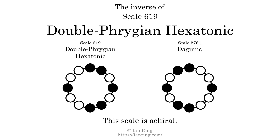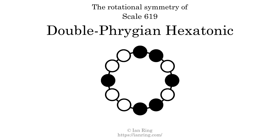The inverse of a scale is a mirror image — it is what you get when the sequence of intervals is reversed. The inverse of this scale is scale 2761, also known as Dijimic. This scale is achiral, since it can transform into its own reflection by a rotational transformation. This scale has no rotational symmetry.